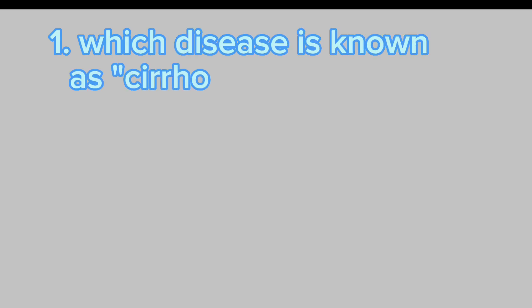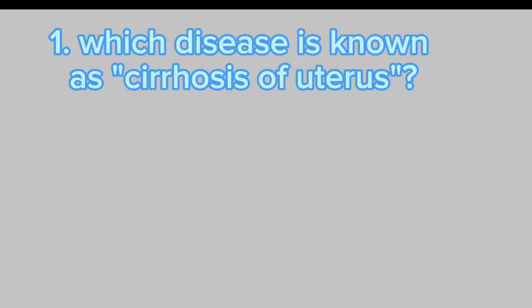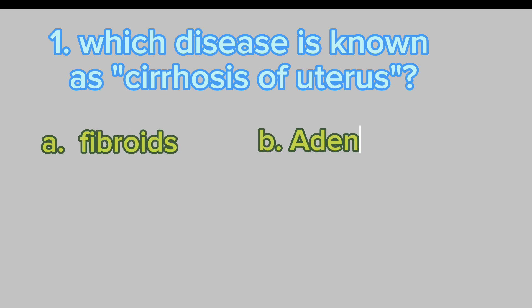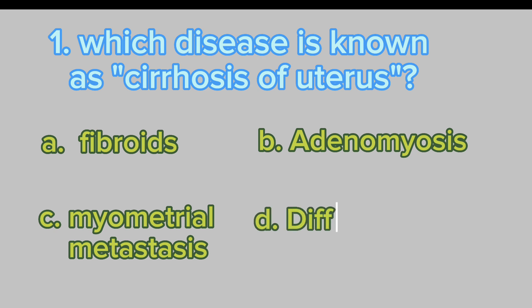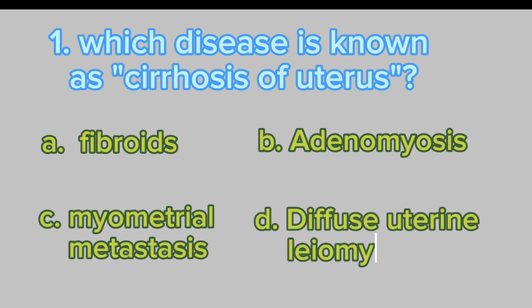Which disease is known as cirrhosis of uterus? A. Fibroids. B. Adenomyosis. C. Myometrial metastasis. D. Diffuse uterine lyomyomatosis.